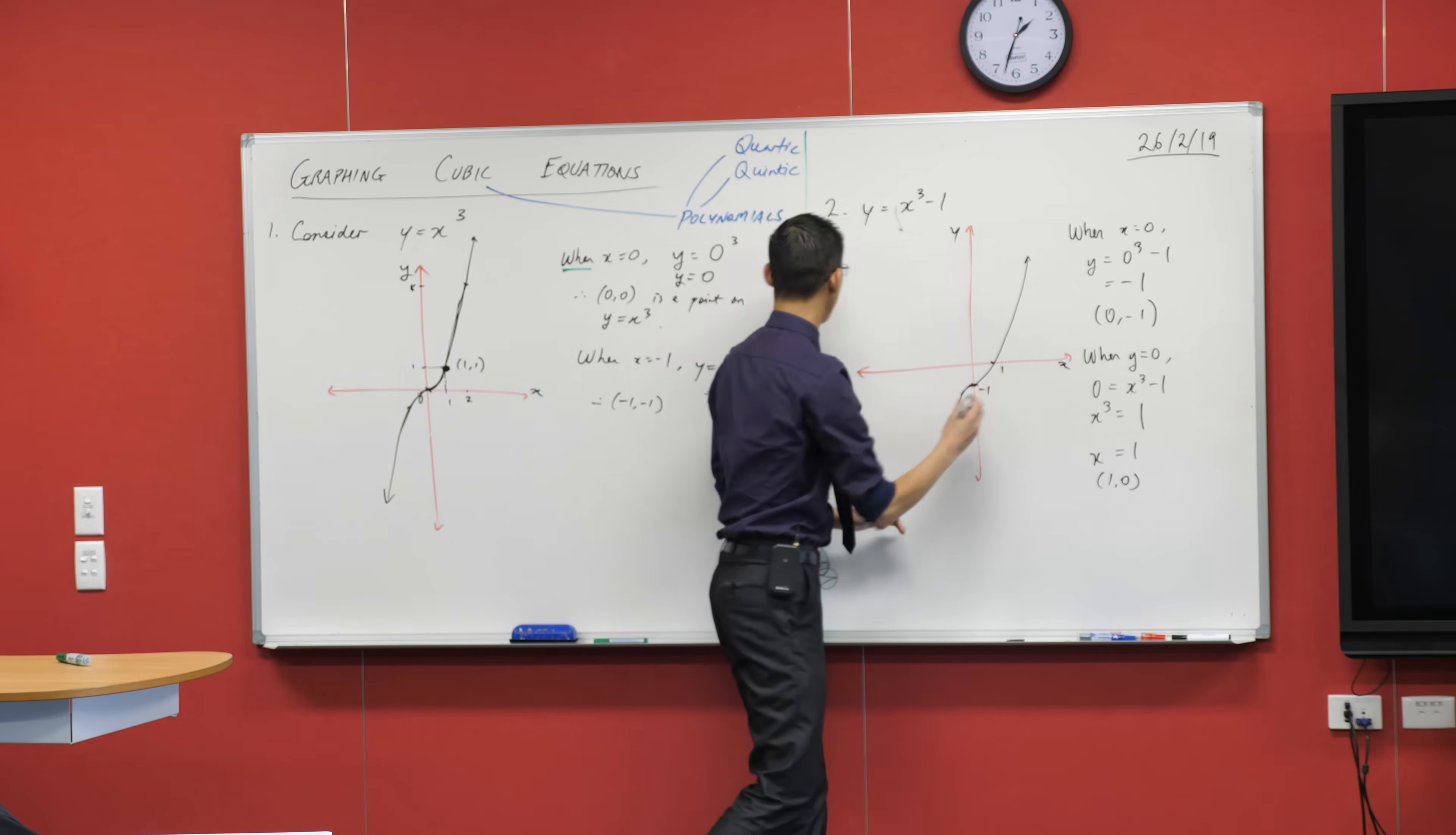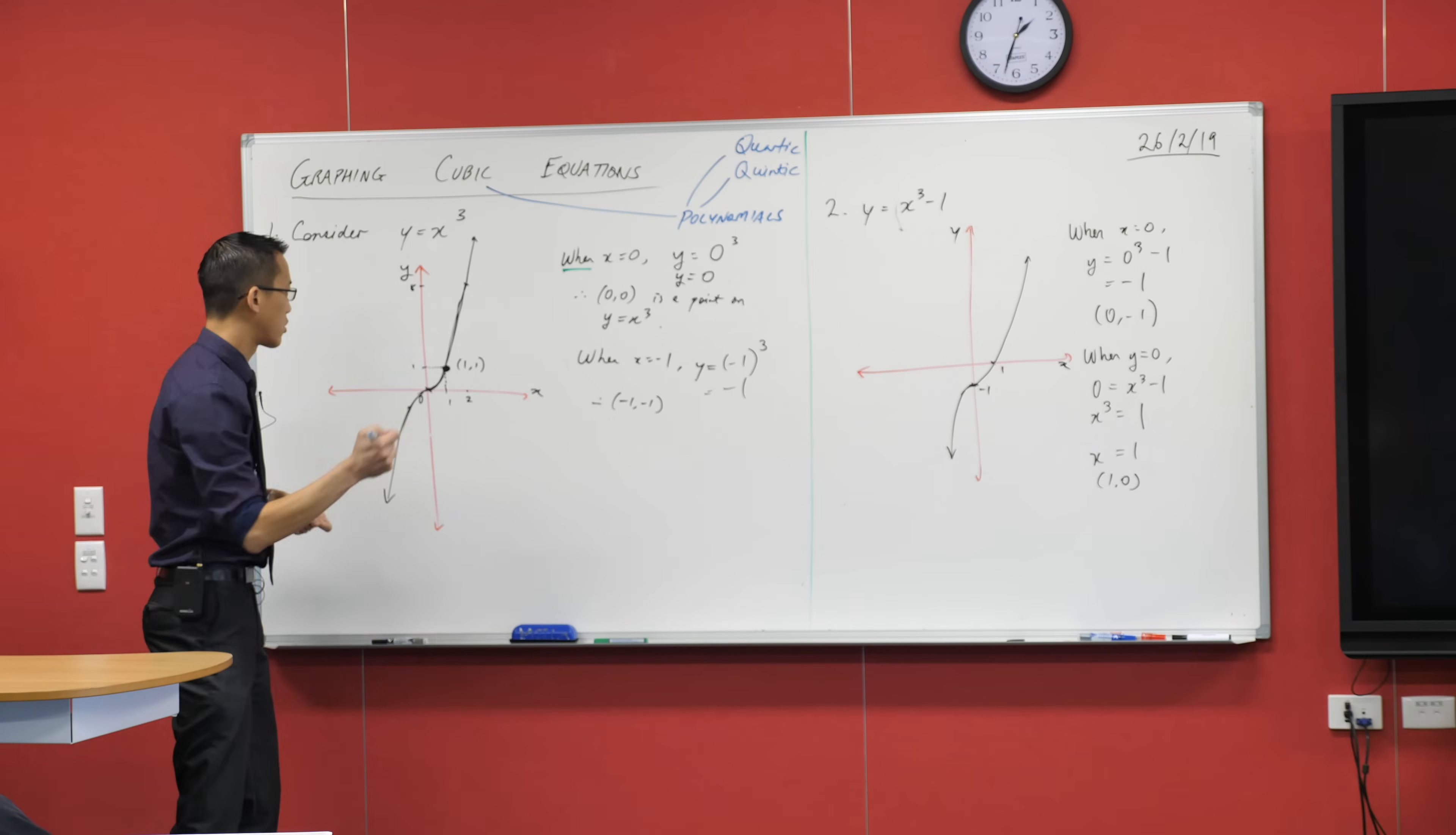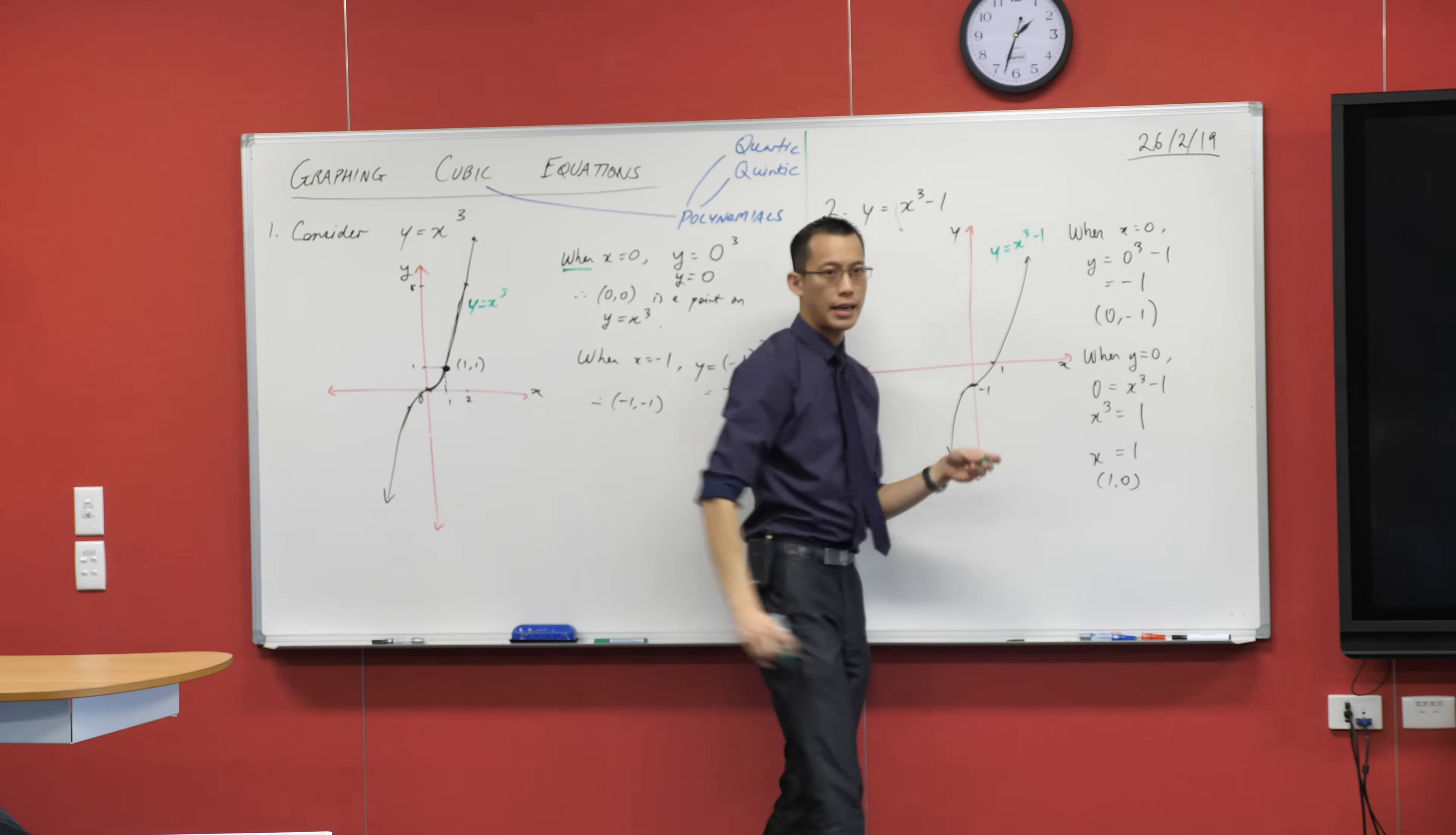Y, x. And I've been a bit naughty. I've been leaving off each of these times. We should label what the equation is as well. So that's y equals x cubed.